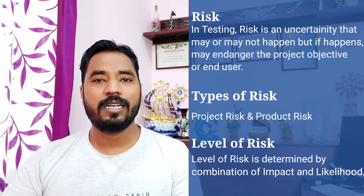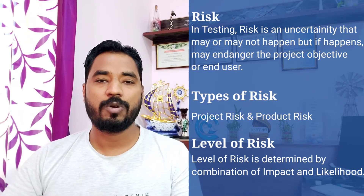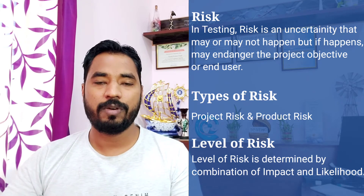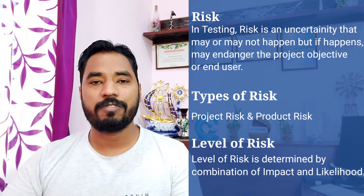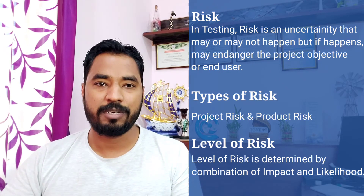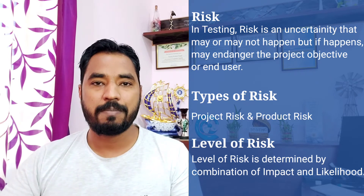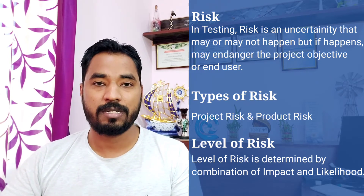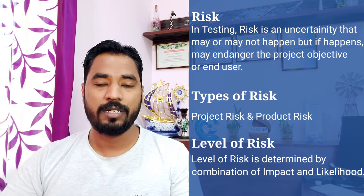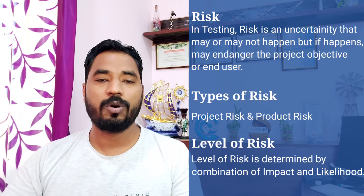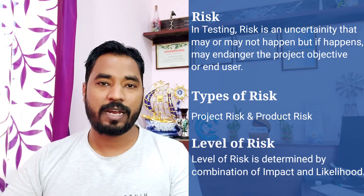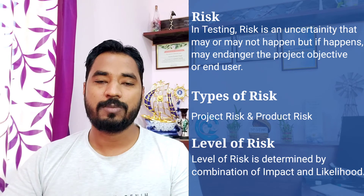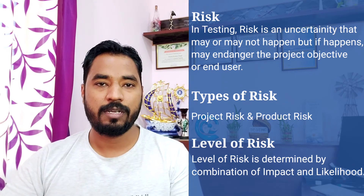There is a level of risk which is determined once you identify a particular risk. The level of risk is determined with the help of two parameters: the impact of the risk if it happens, and the probability of that event happening, which is called likelihood. So a risk is always determined by the combination of impact — which is severity — and likelihood, that is, the probability of that event occurring.